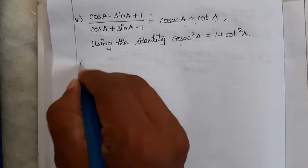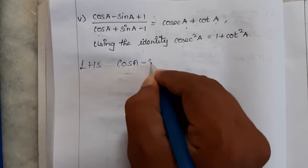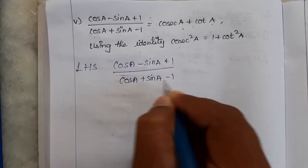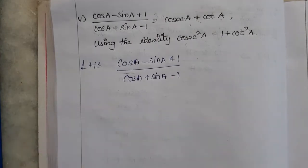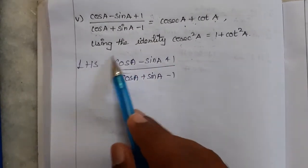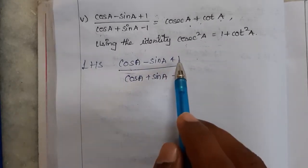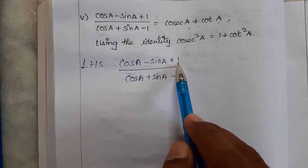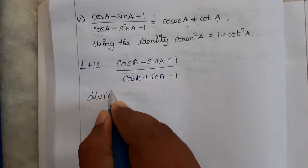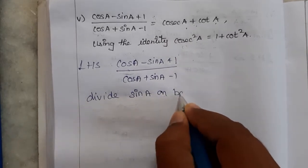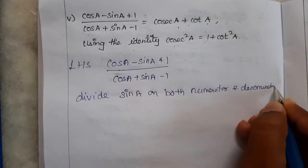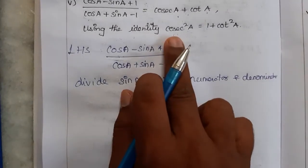Let me choose LHS: cos A minus sin A plus 1, divided by cos A plus sin A minus 1. Since they said to use cosec and cot, let us divide numerator and denominator by sin A, so that cos divided by sin gives cot A.